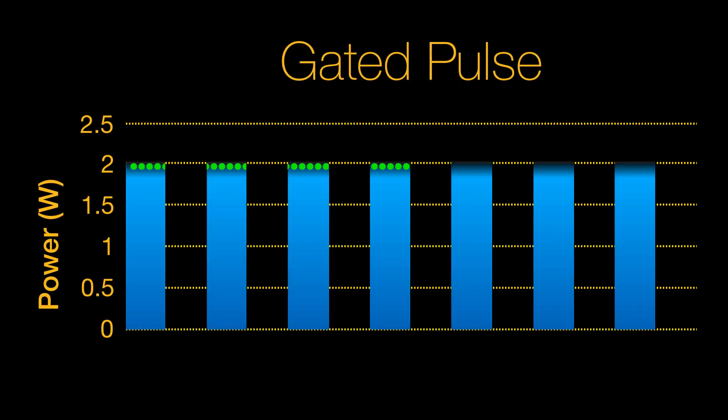Manufacturers responded with gated pulsing, where the laser turns off 50% of the time, but the power emitted was still too low.